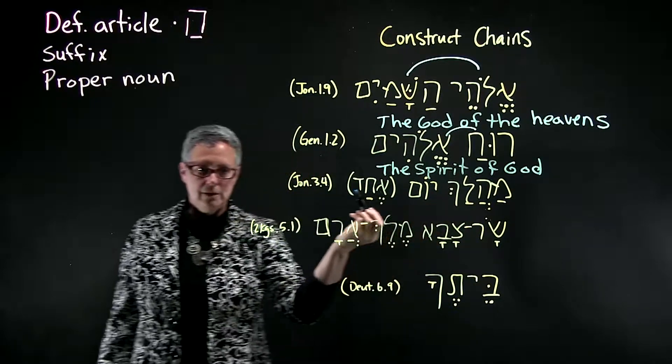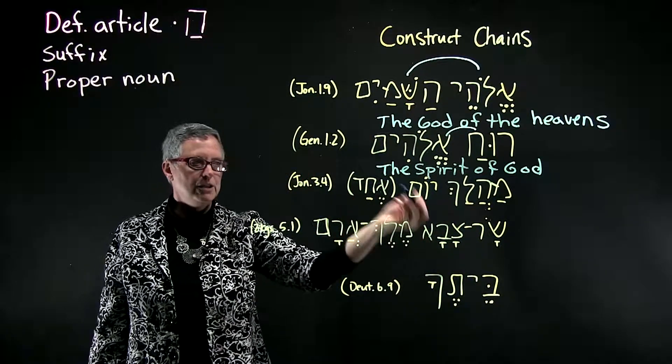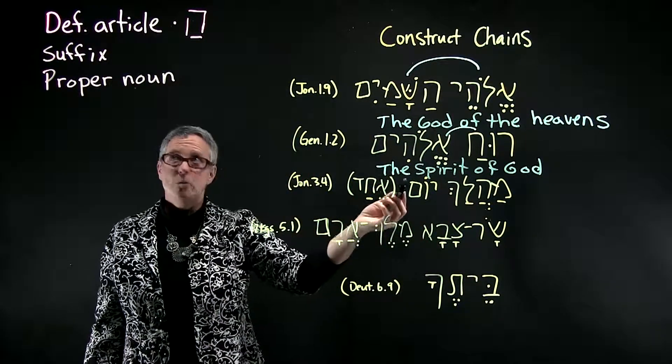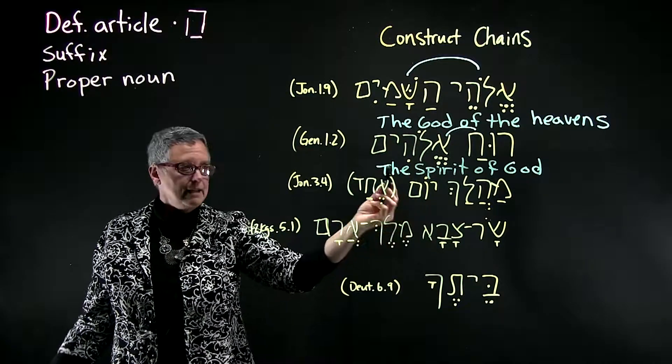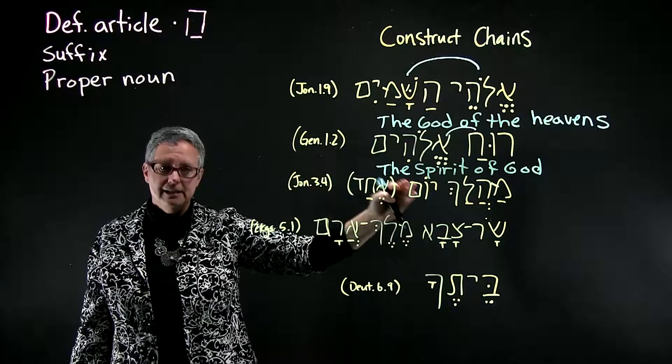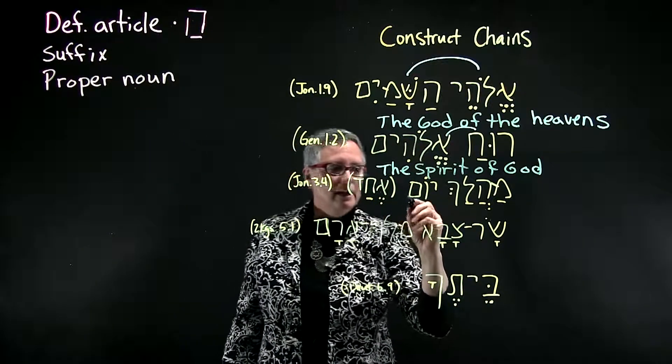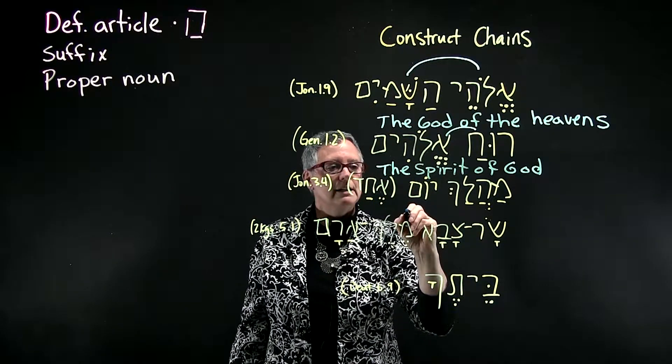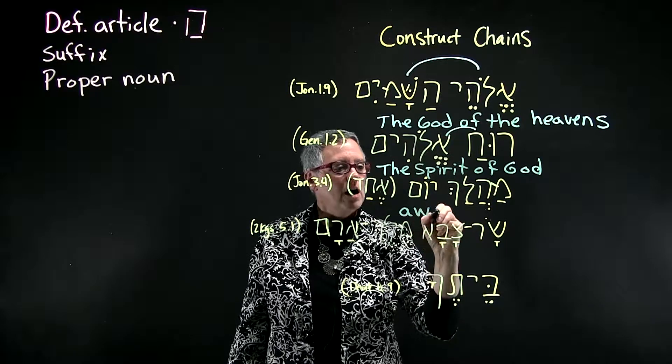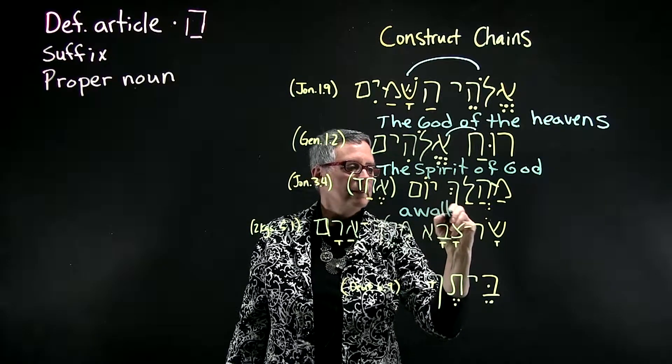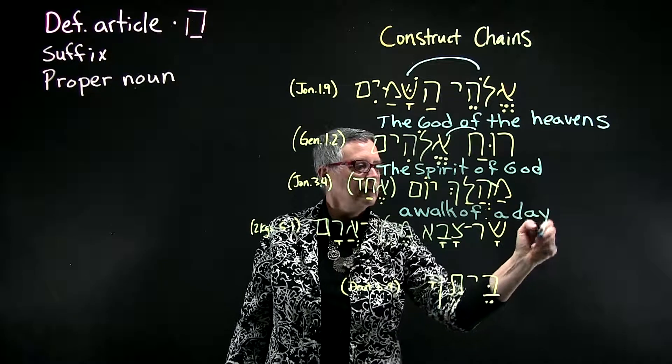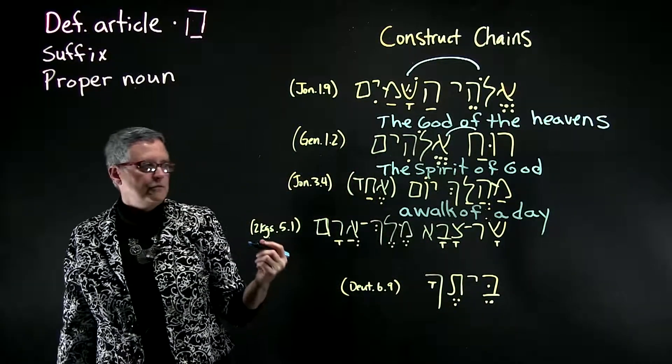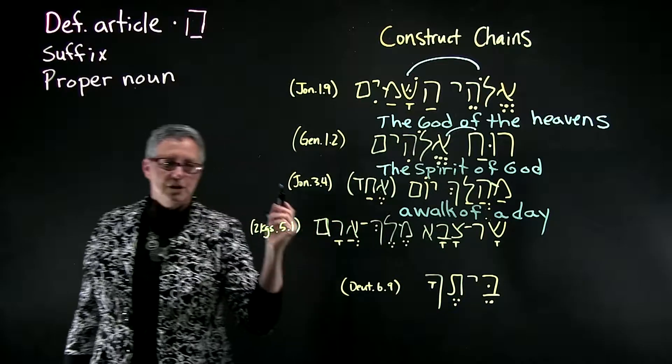Mahalach Yom. Mahalach Yom. The Yom doesn't have a definite article. It doesn't have a suffix and it's not a proper noun. So this is an indefinite construct chain which we would translate as a day's walk, from the third chapter of Jonah.